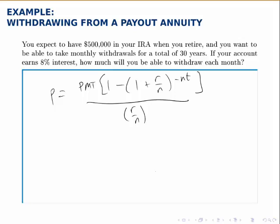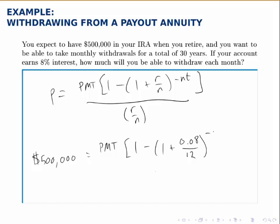We're given P, the lump sum, and asked for PMT, the withdrawal amount. With a lump sum amount of $500,000, PMT is unknown. Then we have 1 minus, in parentheses, 1 plus R — 8% — over N, 12, because these are monthly withdrawals, to the negative 12 times 30, because we want to take withdrawals for 30 years, all over R divided by N.